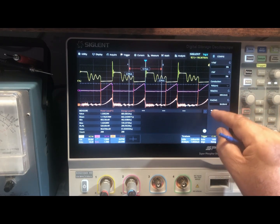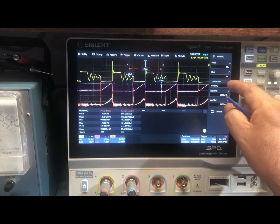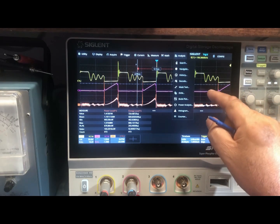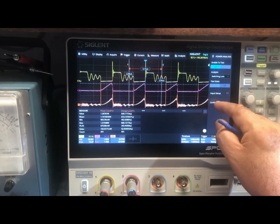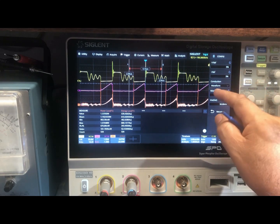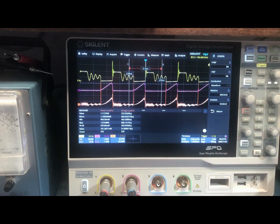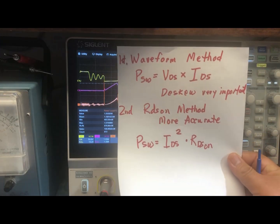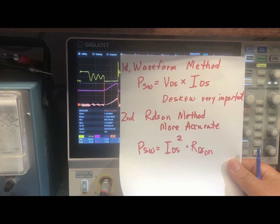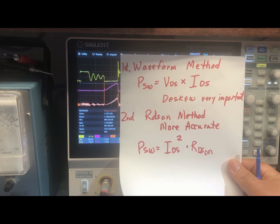Under Configure you have options including Conduction. The first method I'm going to cover is the Waveform method. Under Configuration you have Waveform, RDS-on, and VCE-sat. With the Waveform method, it calculates the switching loss PSW as the voltage across drain-to-source multiplied by the current going through the drain and source. When you multiply those two you get the switching loss, or power loss.